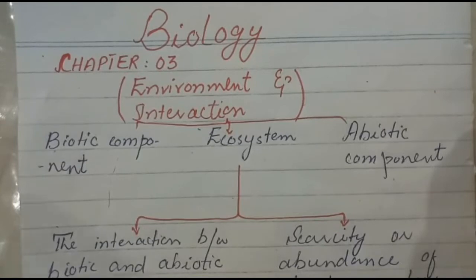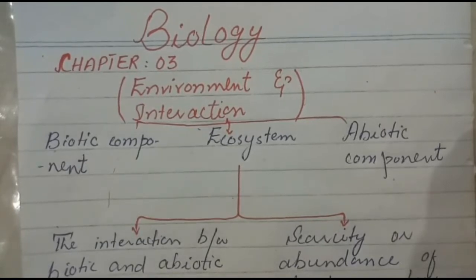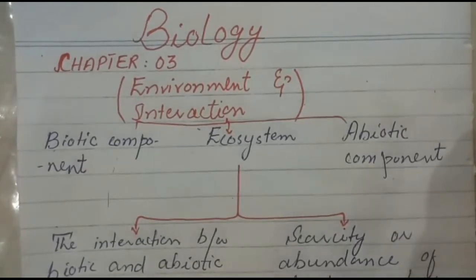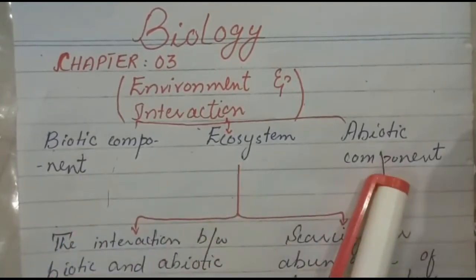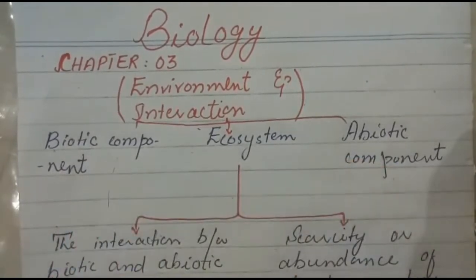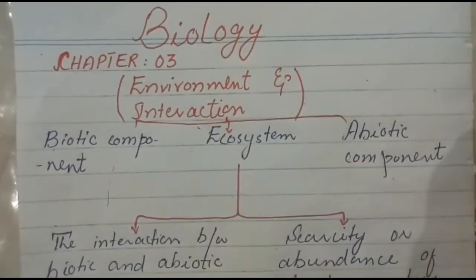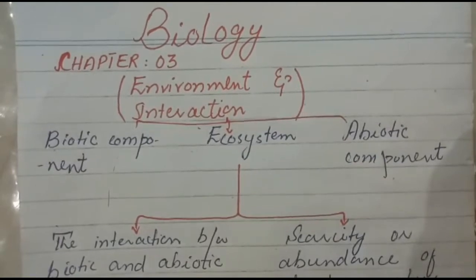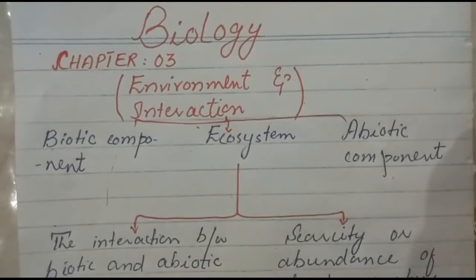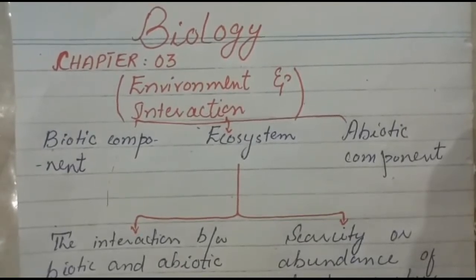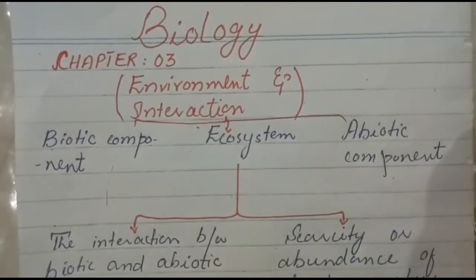The most important things we will cover about the environment are biotic components and abiotic components. As we know, living things depend on each other for survival and compete for food, shelter, water, and light.